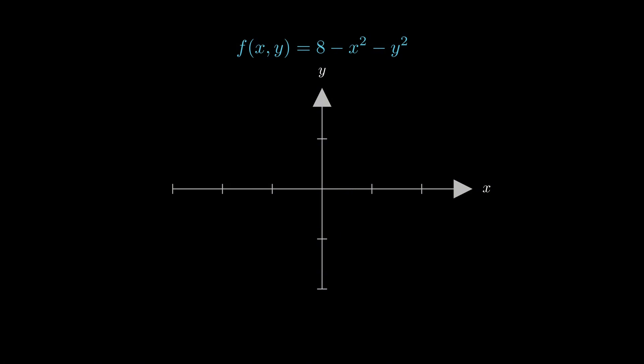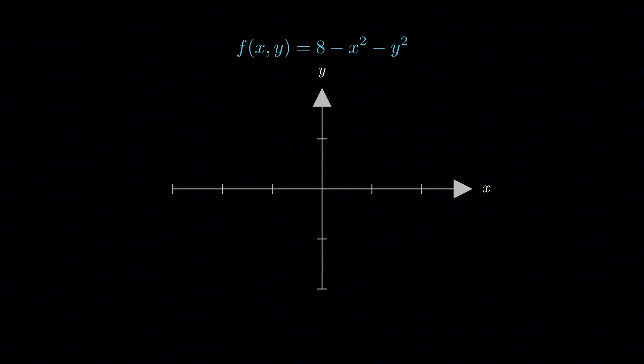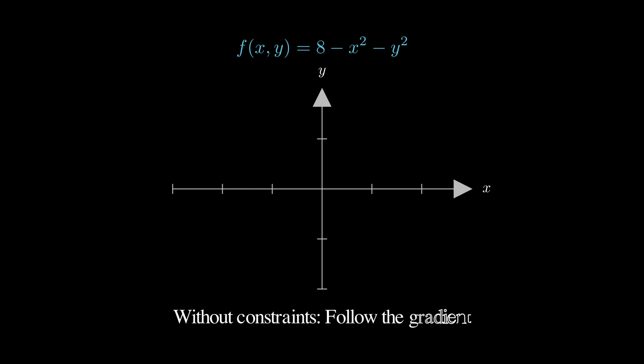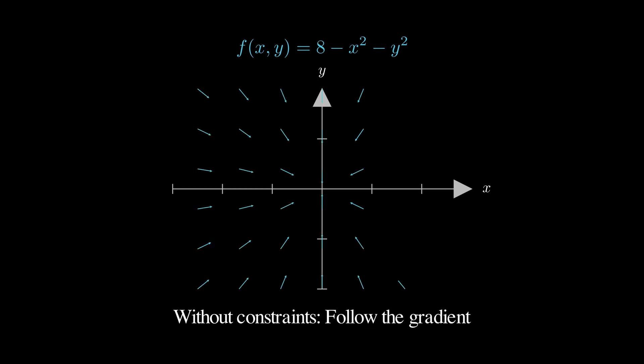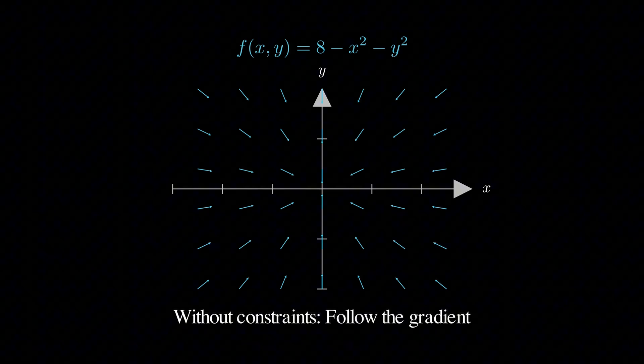When you're trying to maximize a function without any constraints, the strategy is pretty straightforward. You just follow the gradient. These blue arrows show the gradient field and they all point toward the direction of steepest increase.